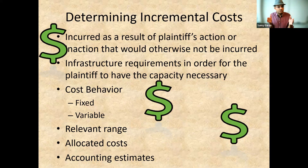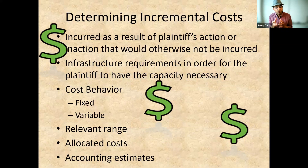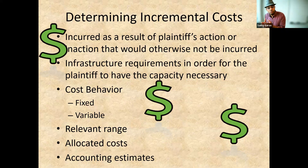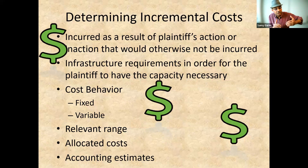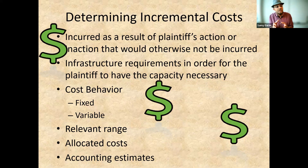Relevant range defines which period we need to address in our calculation. Allocated costs such as factory overhead are added to production costs using allocation bases like machine hours, labor hours, or total direct labor costs. We can also use accounting estimates like depreciation methods — either straight-line, units of production, or declining balance method. These kinds of cost calculations have been discussed in managerial accounting and we use them here to calculate the damage that happened due to loss of profit.